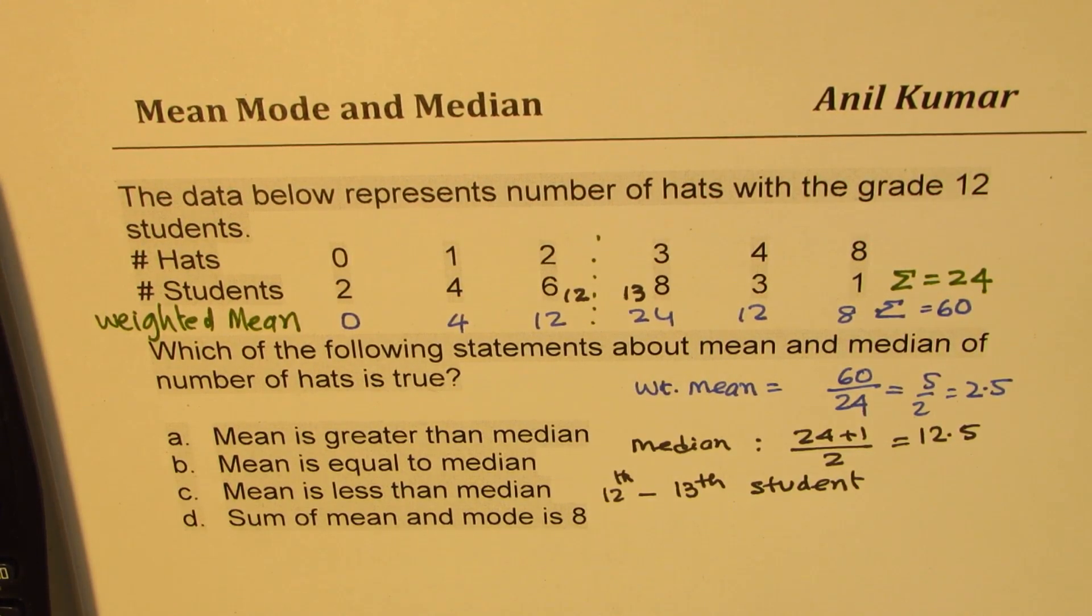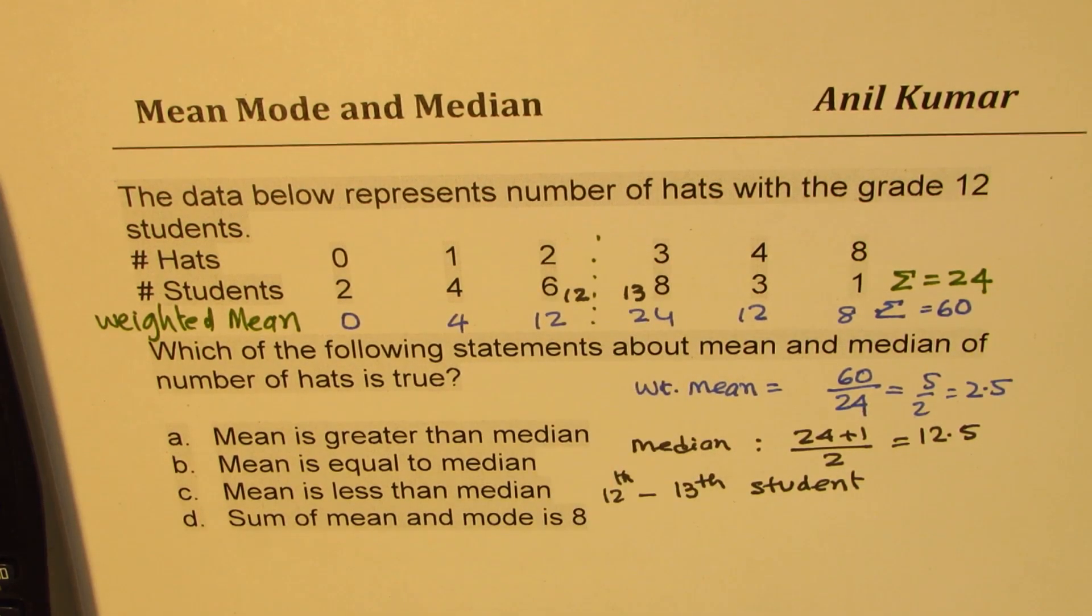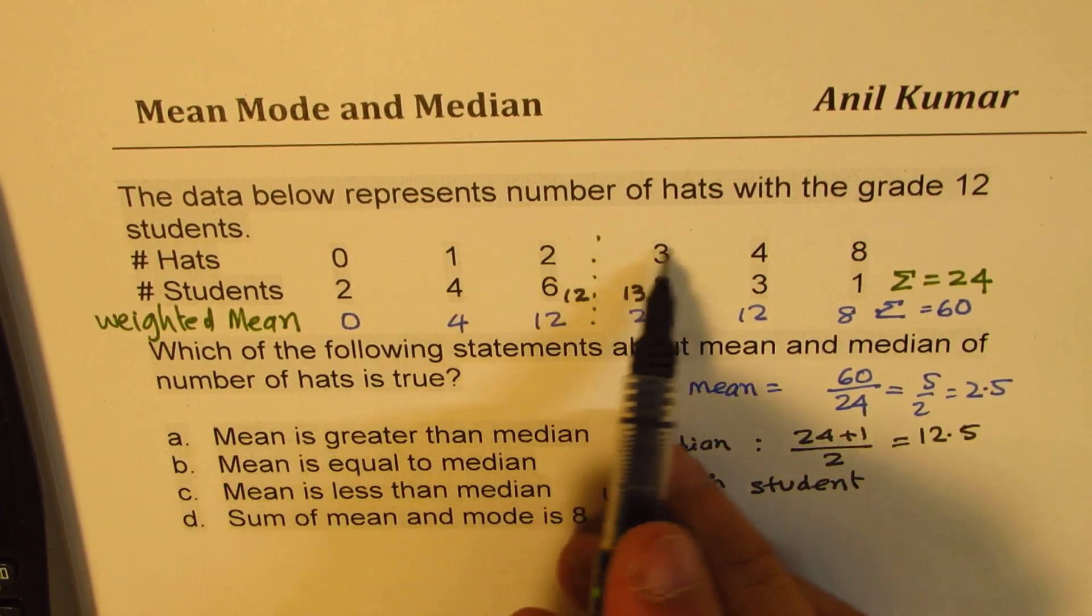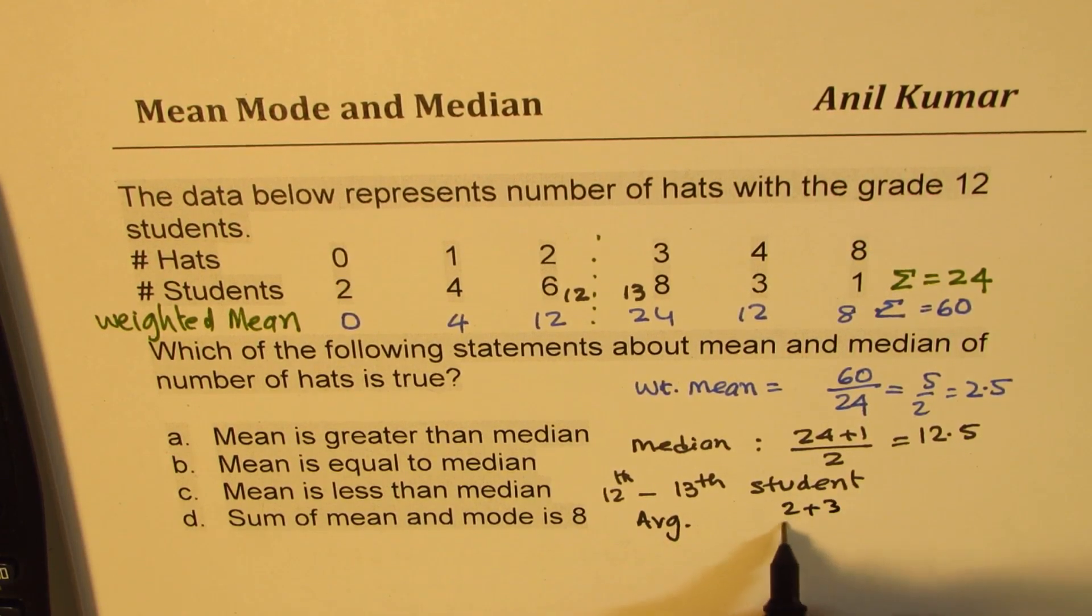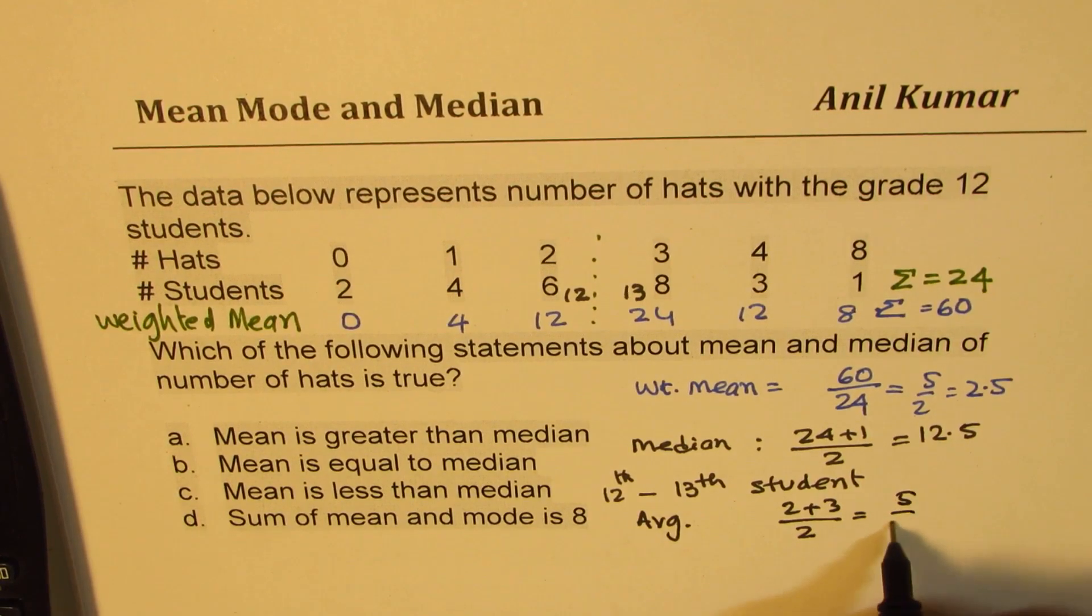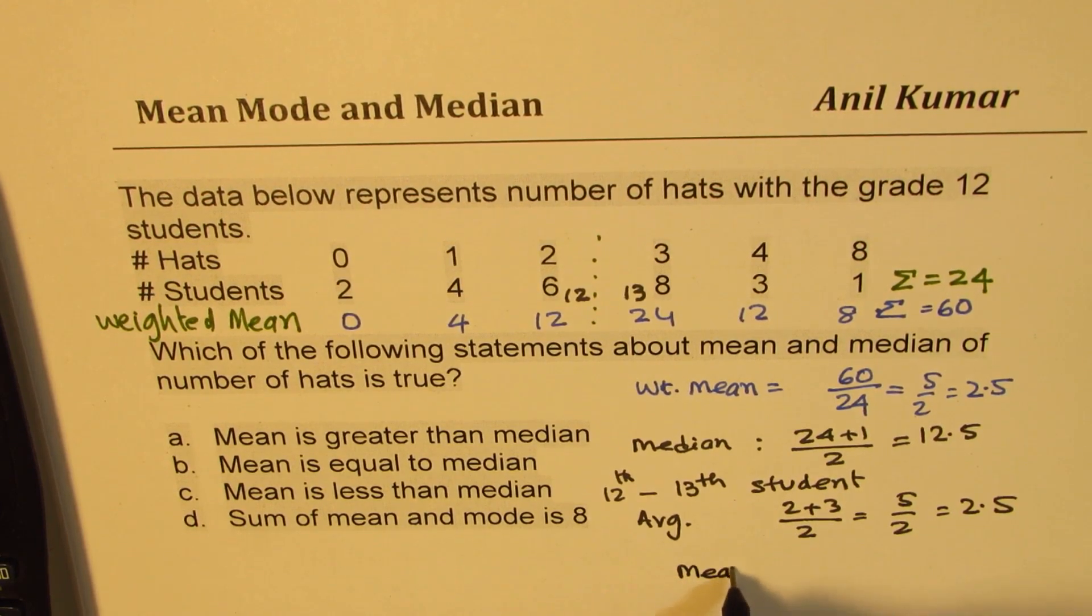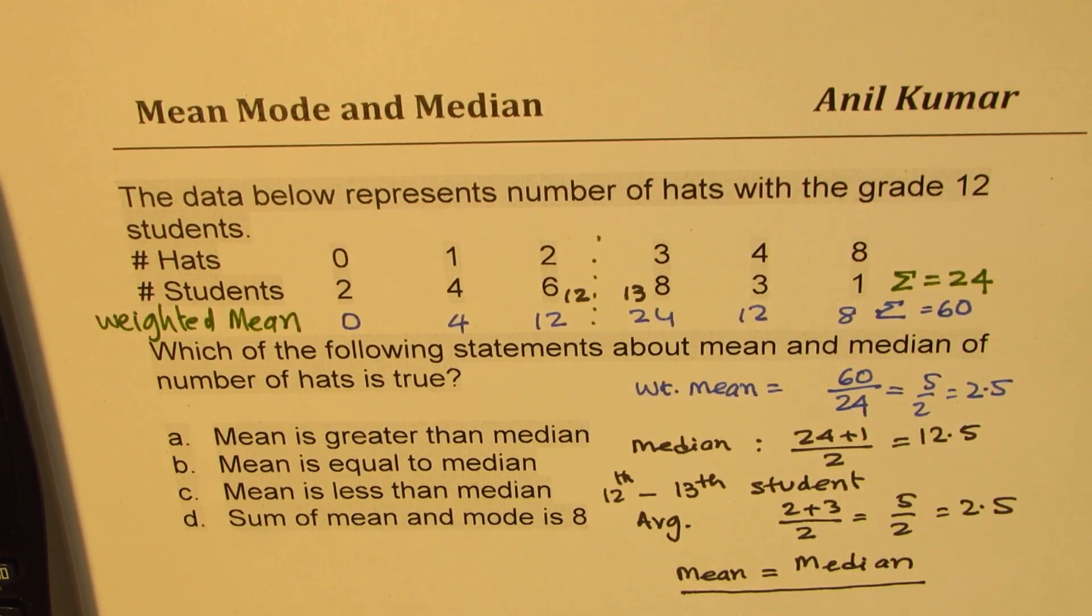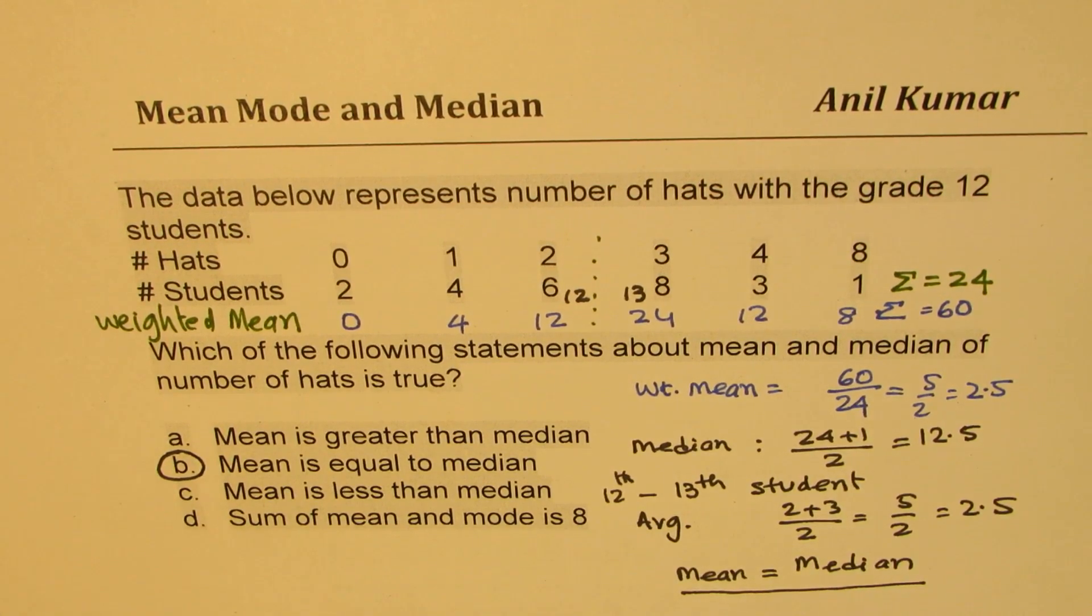Here is your 13th student. The 12th student has 2 hats. 13th student has 3 hats, and therefore, the average will be between 2 and 3. So, we get the average value. Average value will be 2 plus 3 divided by 2, which is again 5 by 2, which is 2.5. So, what you notice here is that the mean is equal to median. So, for such a question, calculation becomes a must, and it really doesn't take much time. So, the option, mean is equal to median, is the correct option. Do you see that part? That is how you are going to solve it.